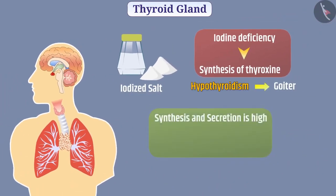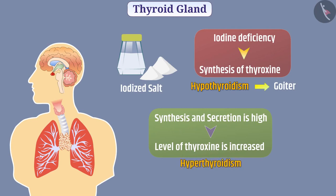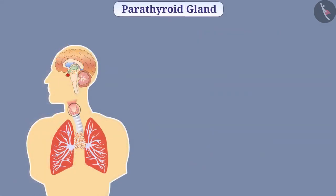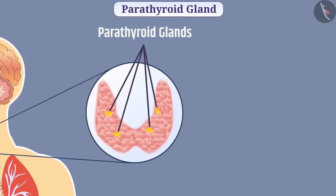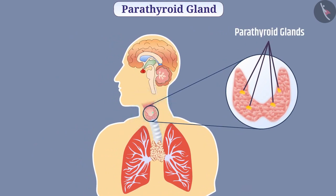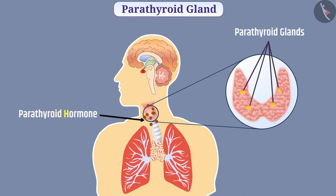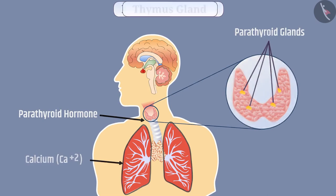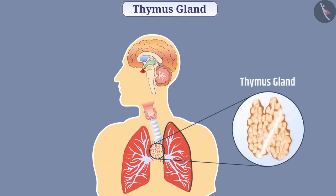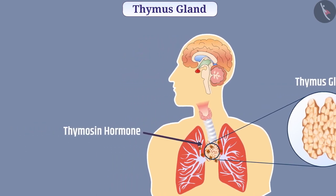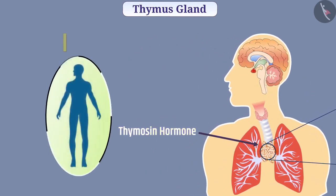If synthesis and secretion of thyroxine is high, the increased level is called hyperthyroidism. There are four parathyroid glands on the posterior surface of the thyroid gland, which secrete parathyroid hormone. Parathyroid hormone increases calcium levels in the blood. The thymus gland, present between the two lungs, secretes thymosin hormone, which assists in the development of the immune system.